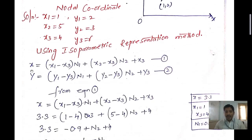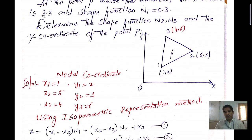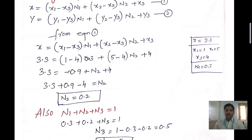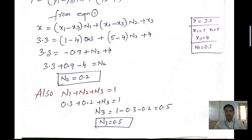From equation 1, the x value given is 3.3. Substituting: 3.3 = (1 − 4)·0.3 + (5 − 4)·n2 + 4. That gives 3.3 = (−3)·0.3 + 1·n2 + 4, which becomes 3.3 = −0.9 + n2 + 4. Moving terms: 3.3 + 0.9 − 4 = n2.